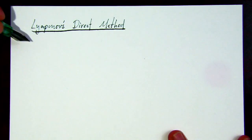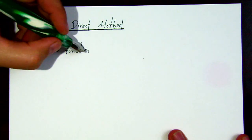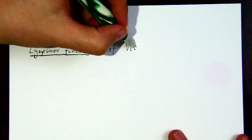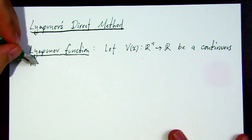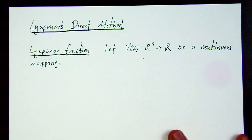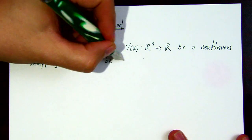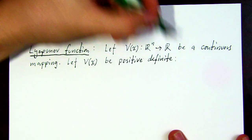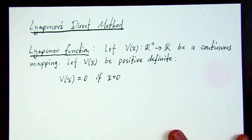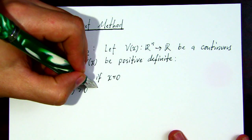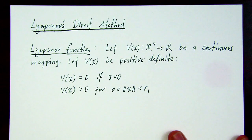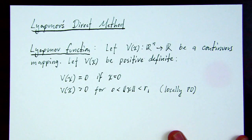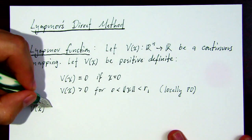Now let's talk about Lyapunov's direct method of stability — there's also an indirect method that looks at eigenvalues, but this one depends on a thing called a Lyapunov function. We let V(x) be a continuous mapping from R^n into R and we let V be positive definite, meaning V is zero at the origin and greater than zero otherwise. We make this positive definite property local, bounding it between the origin and some real number r based on the norm of x.